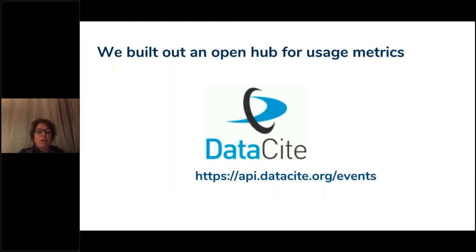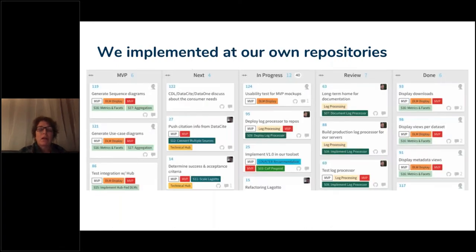At DataCite, we built an open hub for usage metrics, available to anybody through our API — so you can grab those usage metrics via the API. The other thing we did is implement this at our own repositories: Data One and Daniela's using Dash, and soon Dryad. We found that when we would talk about this project and discuss usage data metrics, we really needed to put a picture with it. We felt it was important to show how it's done and demonstrate the value of showing usage data metrics.